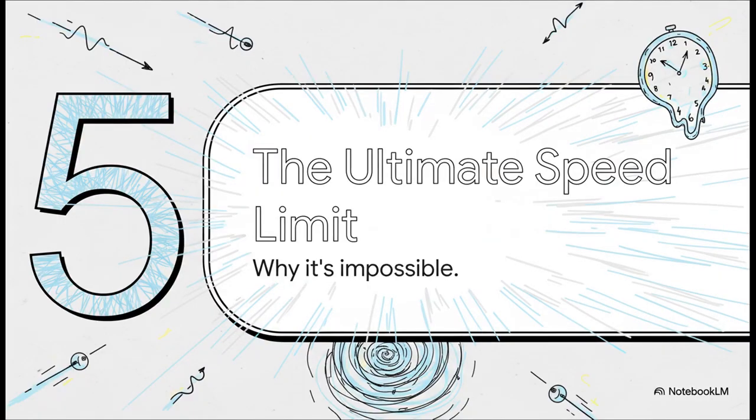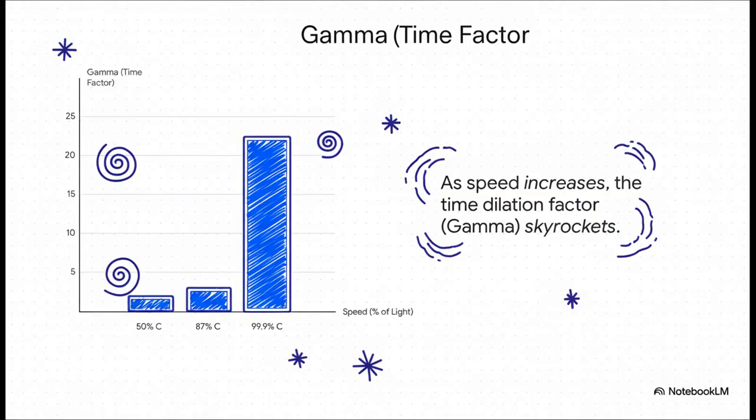So moving things experience time more slowly. That's pretty bizarre. But how does that explain why there's a cosmic speed limit? Let's connect the dots. As you get faster, this time dilation effect doesn't just add up. It goes crazy. It grows exponentially. At half the speed of light, time has only slowed by a little bit. But get up to 87% of light speed, and time for you is now passing at half the rate of everyone else. Get to 99.99%, and for every 22 seconds that pass for us, only one second ticks by for you. It's like you're hitting a wall.